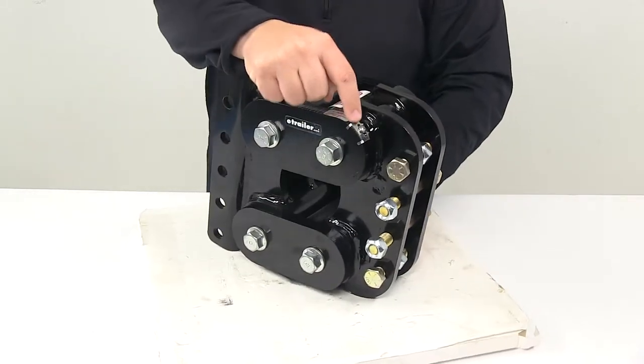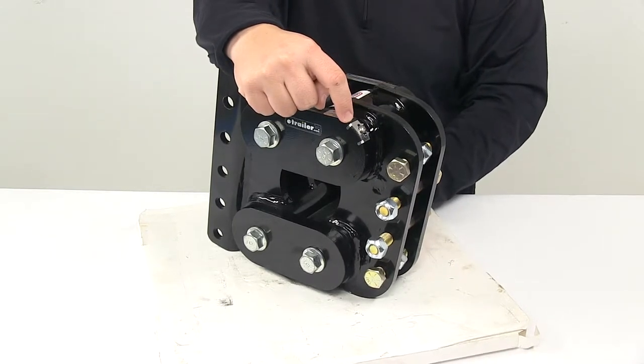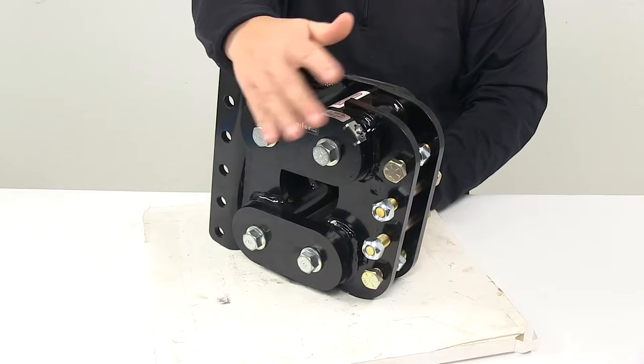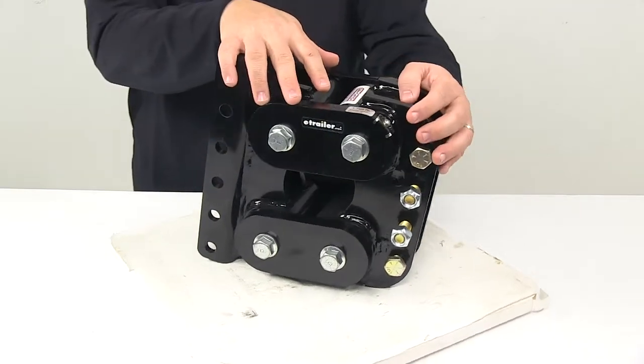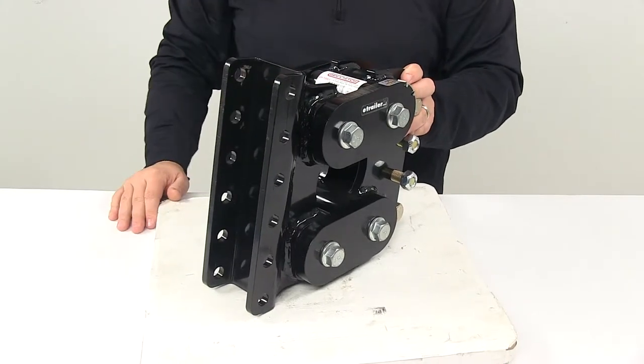Also, right here, we have a mechanical tongue weight scale that's built in. This allows you to get a visual of the tongue weight amount. That way, you can adjust your load as needed. It's SAE J684 certified, products made in the USA.